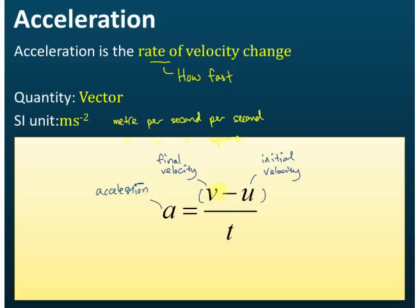v minus u — the final velocity minus the initial velocity — is called the velocity change. t is the time taken for the velocity change. So velocity change divided by time taken gives the rate of velocity change, which is acceleration. Its formula is a = (v − u) / t.